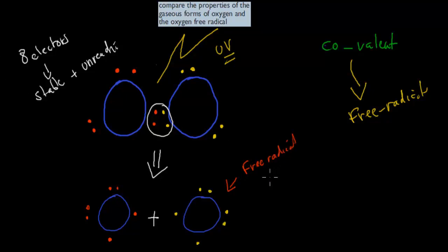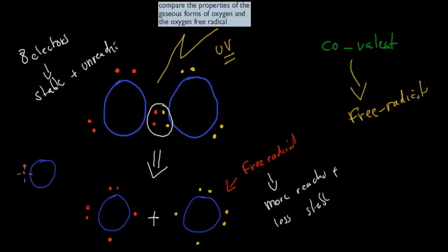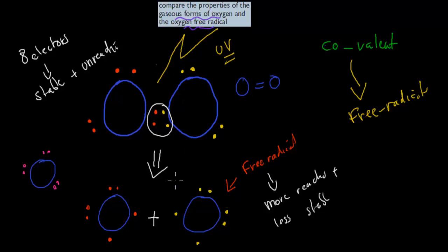A free radical is more reactive and less stable than the original oxygen atom. The original oxygen atom had three double pairs. They bonded together, but then we broke the covalent bond between them. Now instead of having three of these pairs, it has two pairs and two single lone electrons. These lone electrons make it even more reactive. The dot point says: compare the properties of the gaseous forms of oxygen and the oxygen free radical. The gaseous form of oxygen is O2, and the free radical forms when the bond gets broken — one cause being UV light.